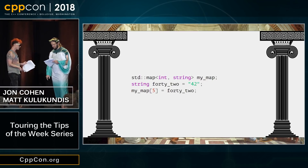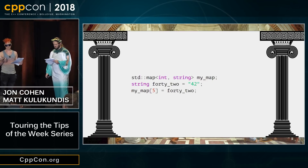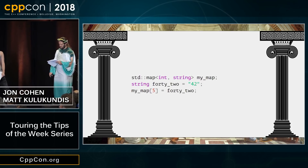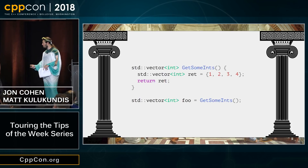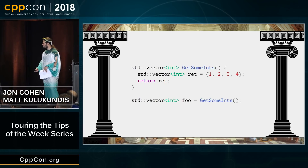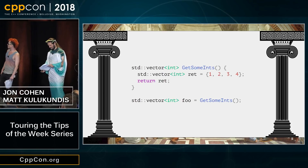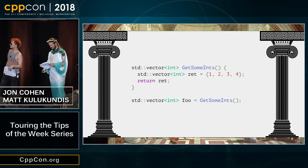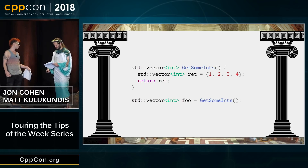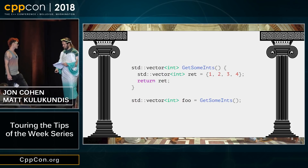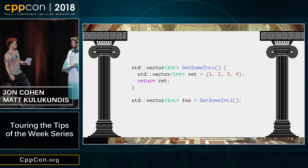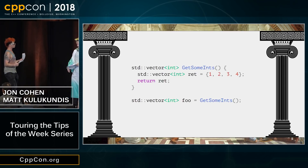These were easy, right? Yeah. It's getting kind of boring, to be honest. So what about this code? Well, that's just got the named return value optimization, right? It doesn't do any copies or any moves at all.